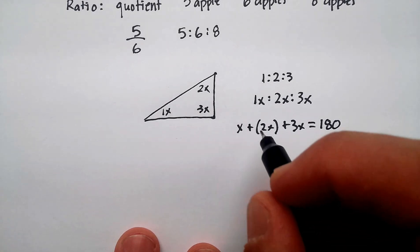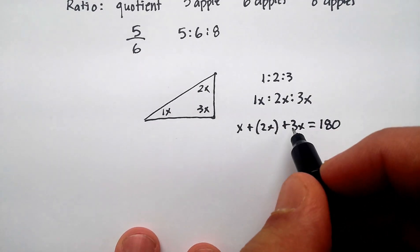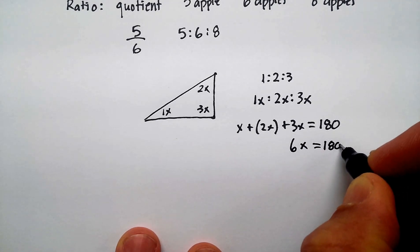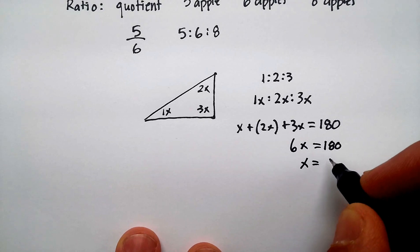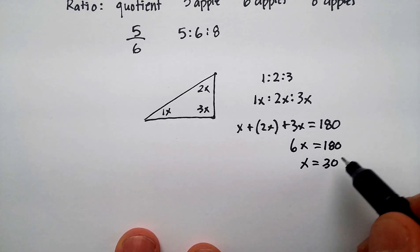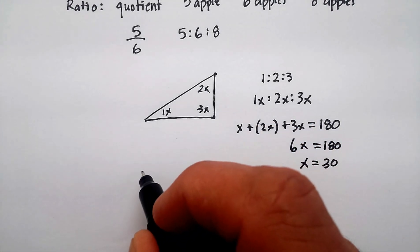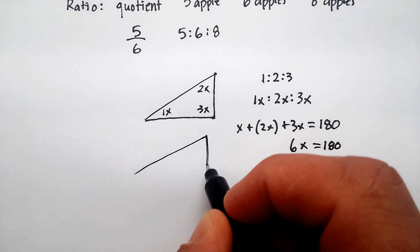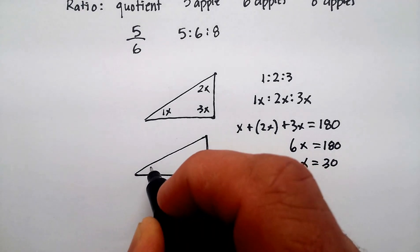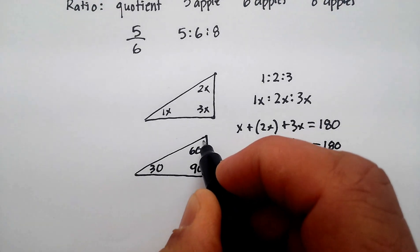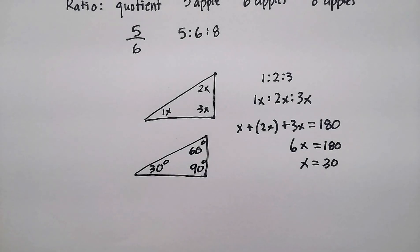And now it's just a matter of solving this. So 1 plus 2 plus 3 is 6, so I get 6x is equal to 180, divide by 6, x is equal to 30. And then I can just go back and fill in each one of these particular x's. And so what I would have here is a 30, 60, 90 degree triangle. And that's how I would use this kind of information to solve ratios and proportions.